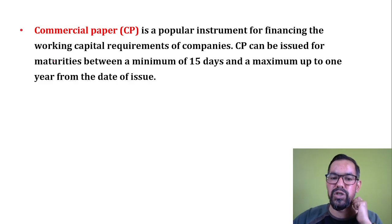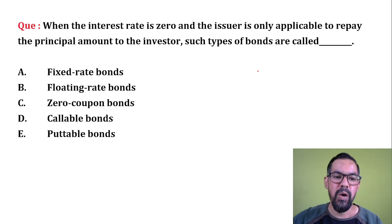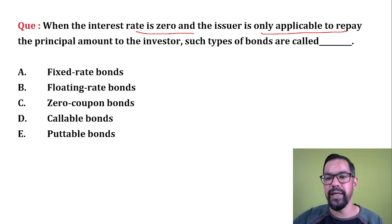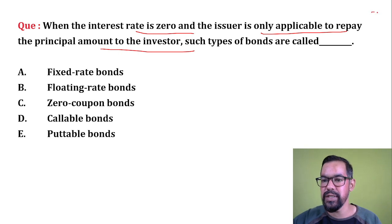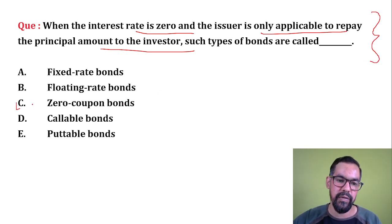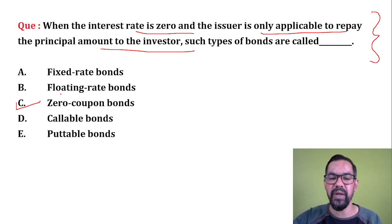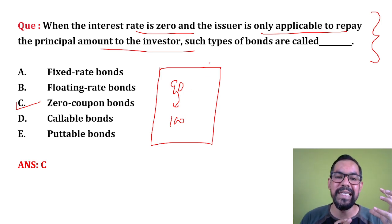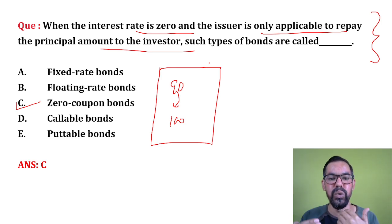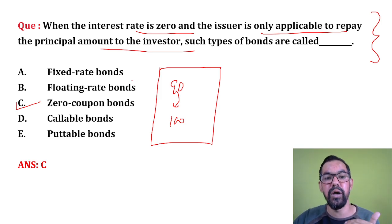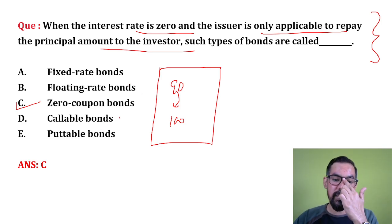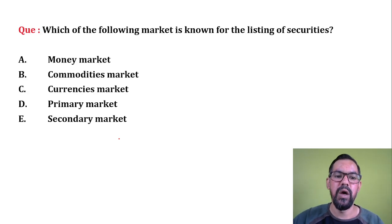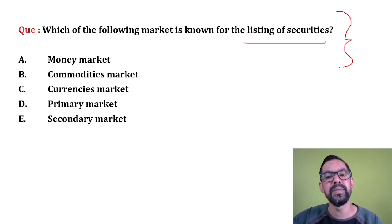Next question: when the interest rate is zero and the issuer is only required to repay the principal amount to the investor, these are known as zero coupon bonds. Zero coupon bonds are generally sold at below par value — for example, you invest 90 rupees and get 100 rupees back. No specific coupon rate is mentioned, but you get a return at maturity. Fixed rate bonds have a fixed interest rate; variable or floating rate bonds vary with market conditions. Callable and putable refer to the optionability of bonds.